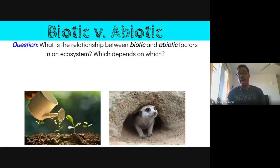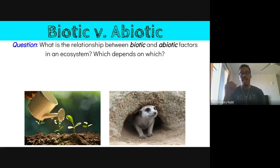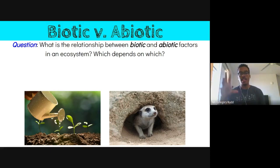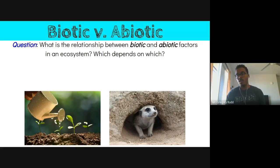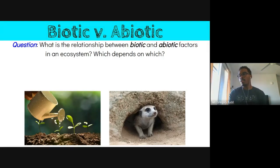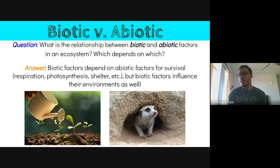Where do the nutrients in soil come from? The soil gets its nutrients from animals and plants — when they die and decay. As plants and animals die and decay, the nutrients that were once part of their bodies are reincorporated into the ground. We see this life cycle: different elements and nutrients contribute to the plants, the plants get eaten, something eats that organism, those things die, and those nutrients are returned to the soil and it starts over again. Biotic factors depend on abiotic factors for survival — respiration, photosynthesis, shelter, and nutrients.